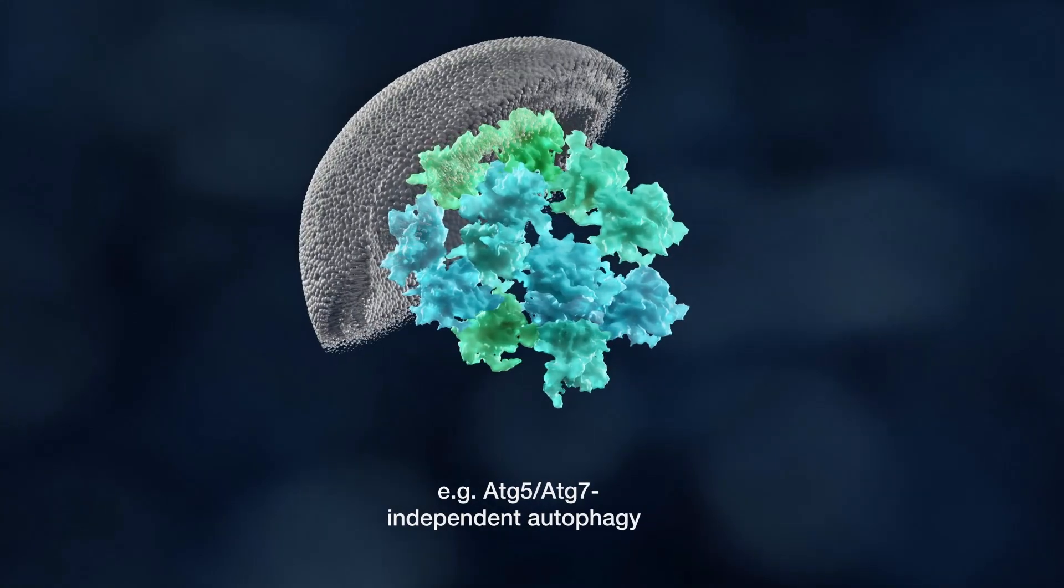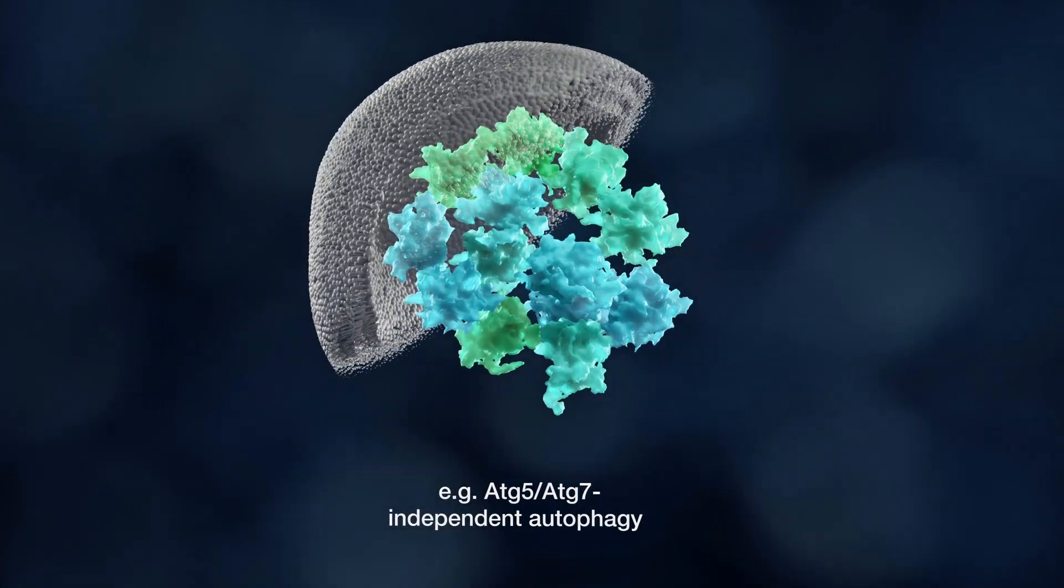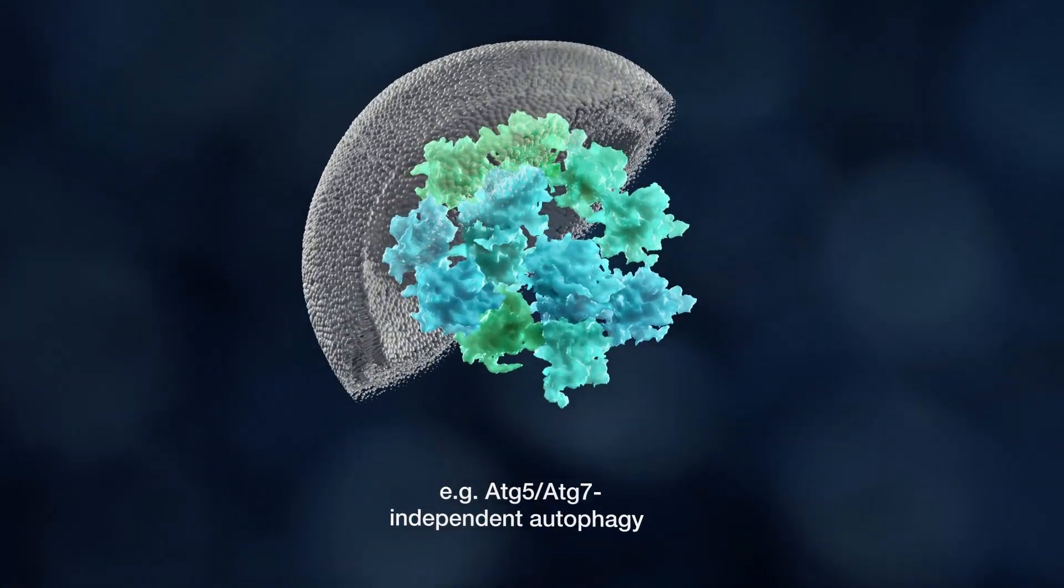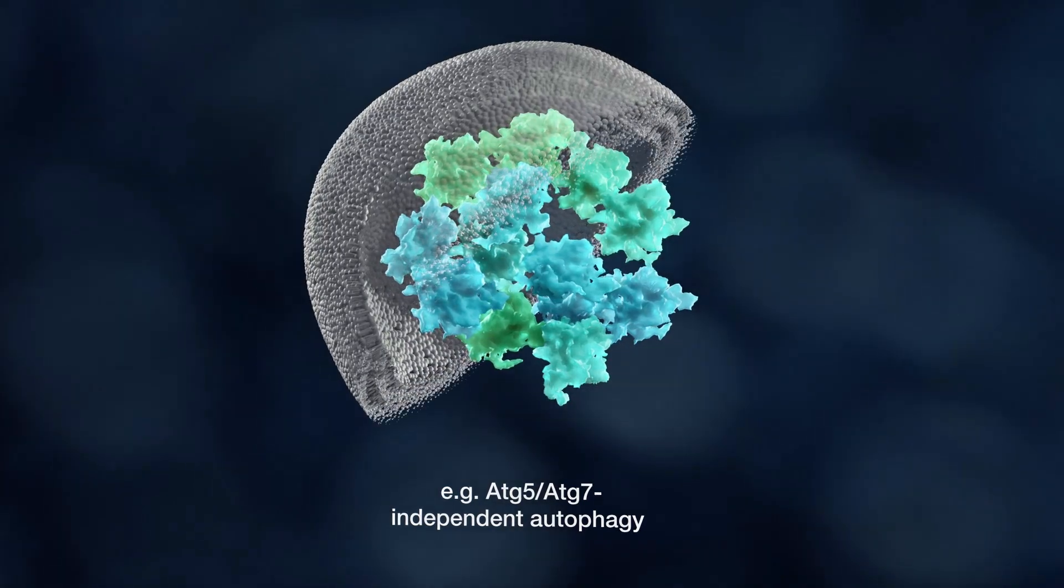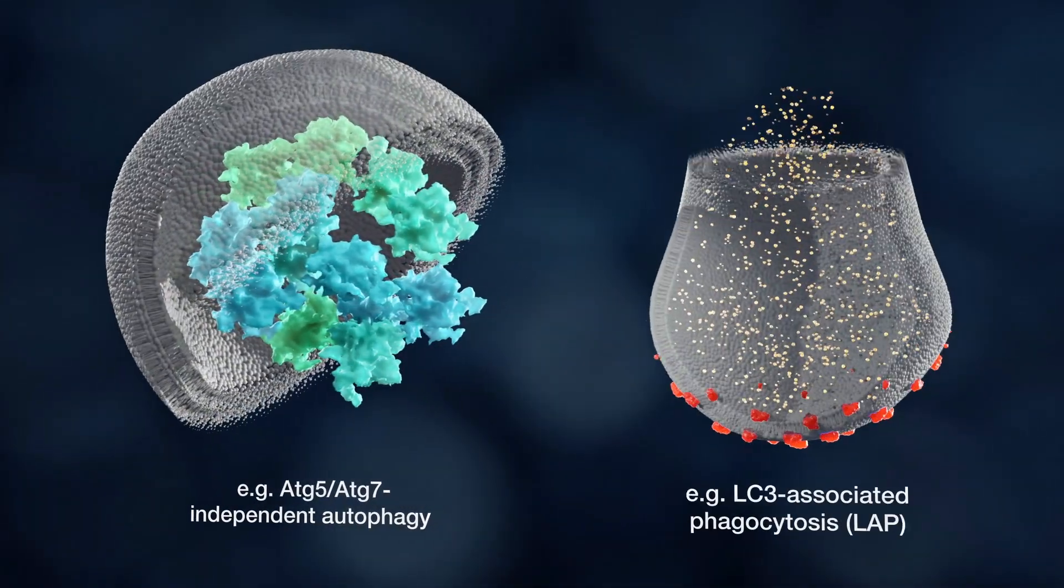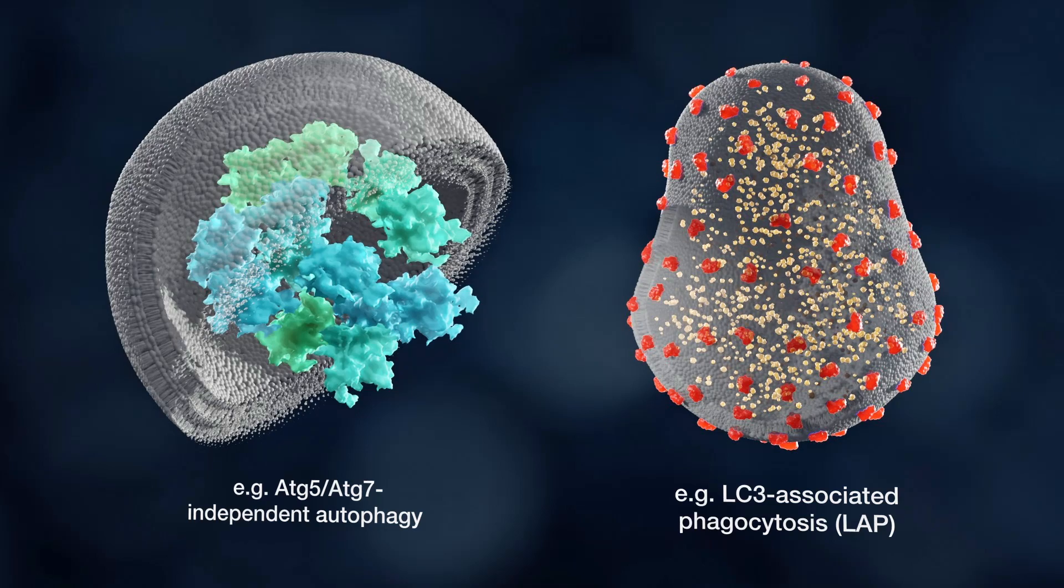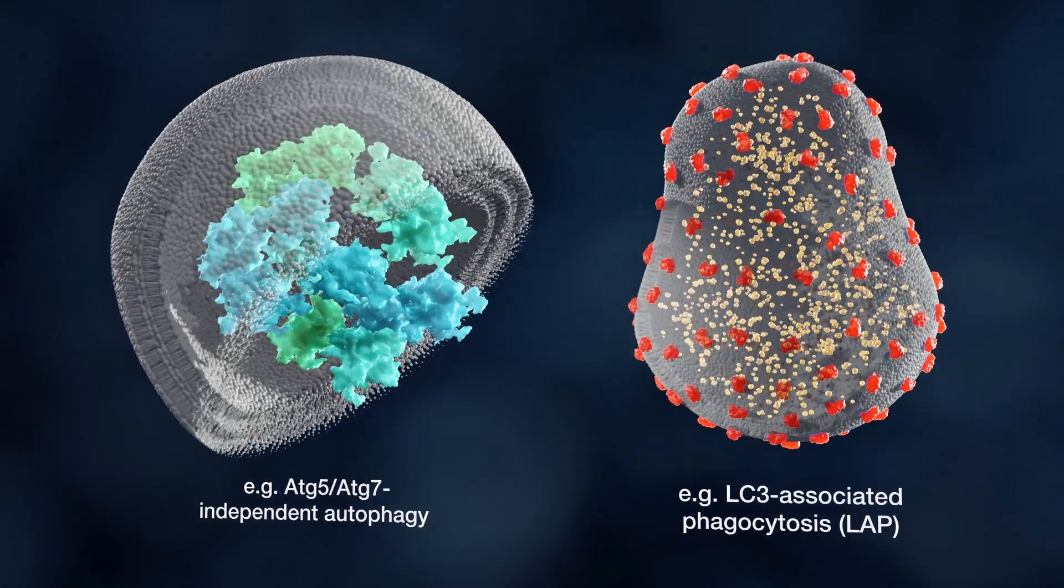However, there are forms of macroautophagy that do not require the function of all ATG modules, and those have been defined as unconventional. Conversely, a single or group of ATG proteins operate in other cellular processes.